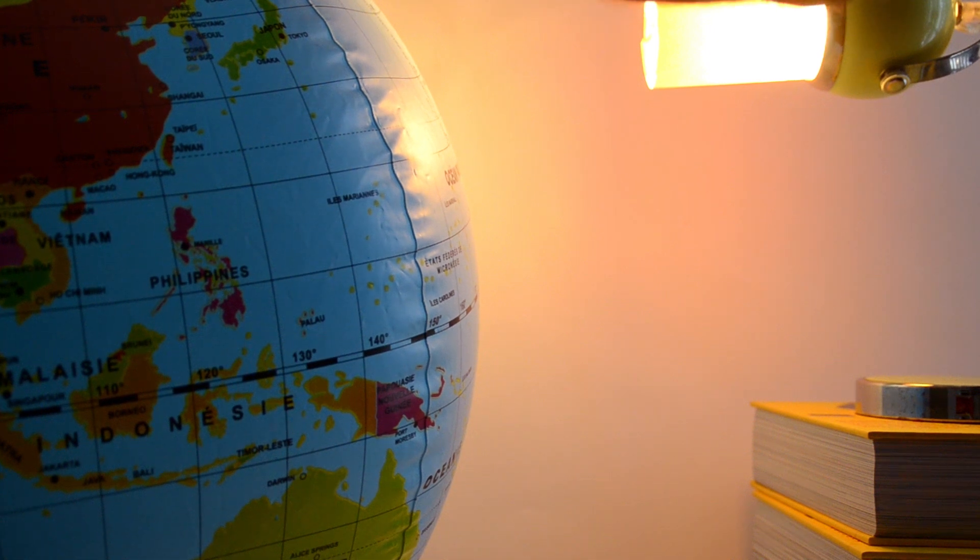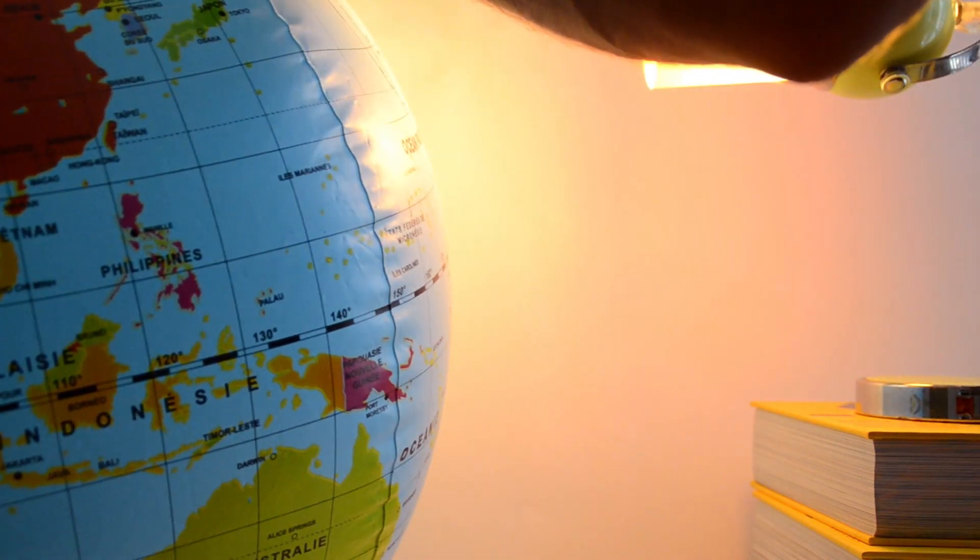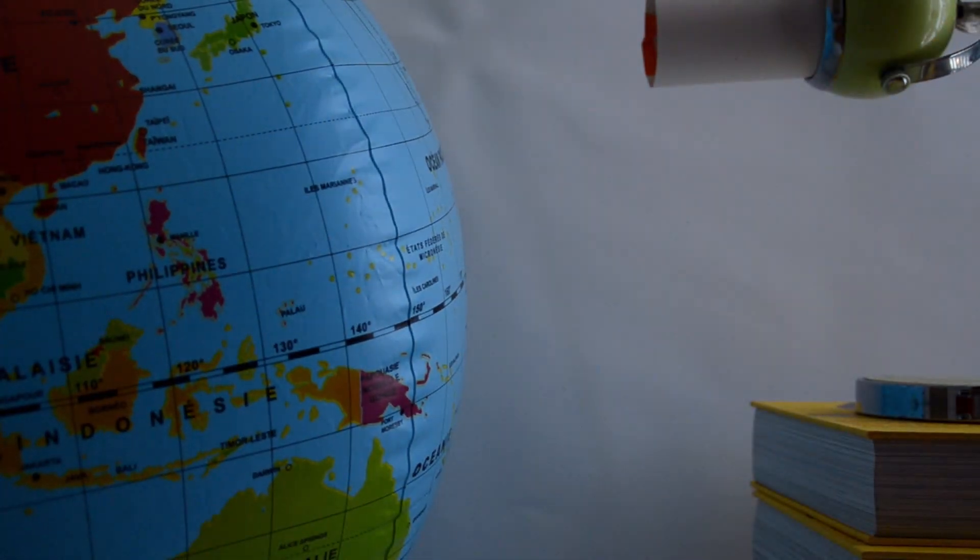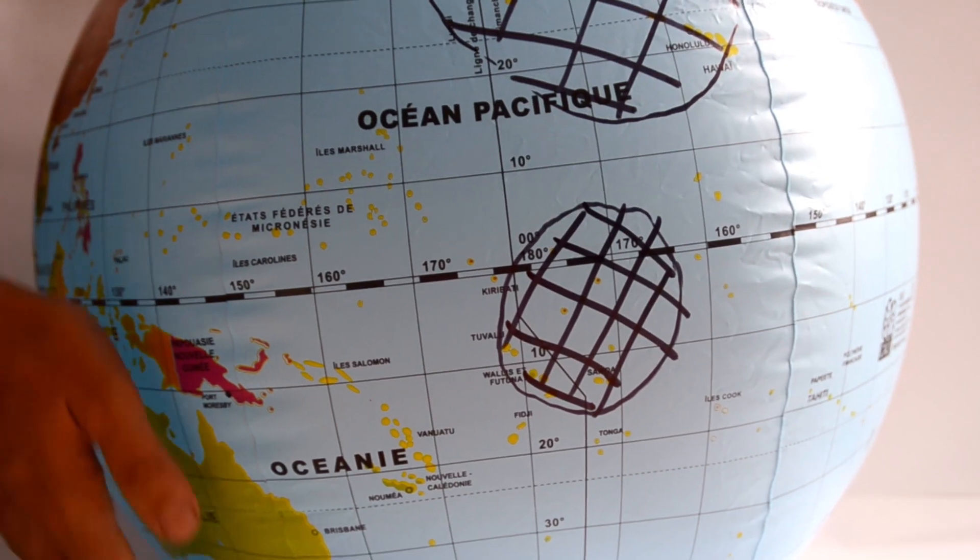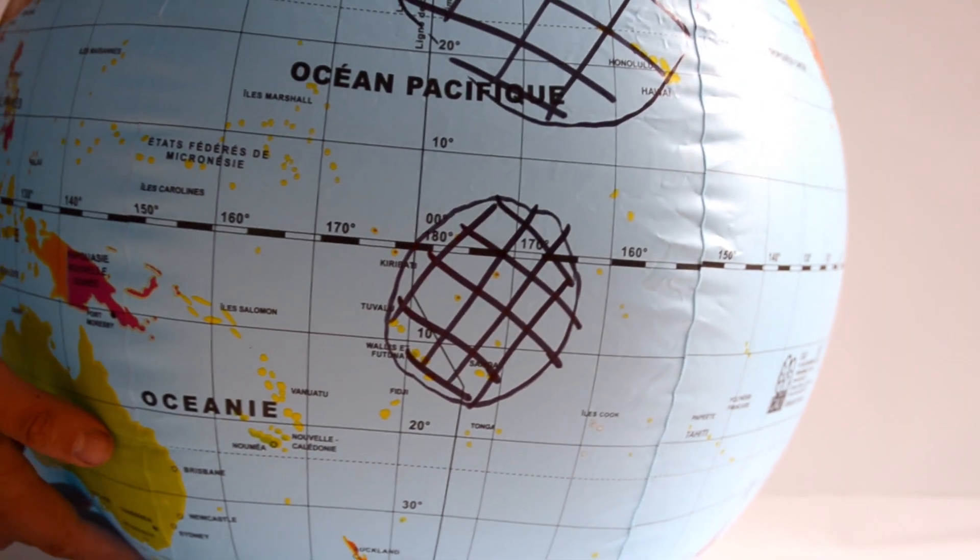The light forms an ellipse on the top of the ball, so let's draw the outline. We can now compare the sizes of the spot we drew on the ball during these two experiments. We can observe that the spot on the middle of the ball is smaller than the one on the top.